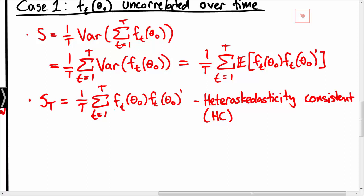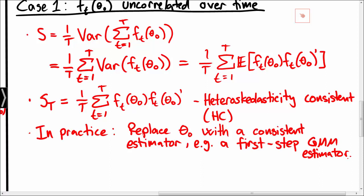The reason why this estimator is heteroscedasticity consistent is that Ft may not have the same variance for all T's, meaning we allow for heteroscedasticity. Note that in practice we do not know θ0, so we replace θ0 with a consistent estimator, which could be based on a first step GMM estimator.